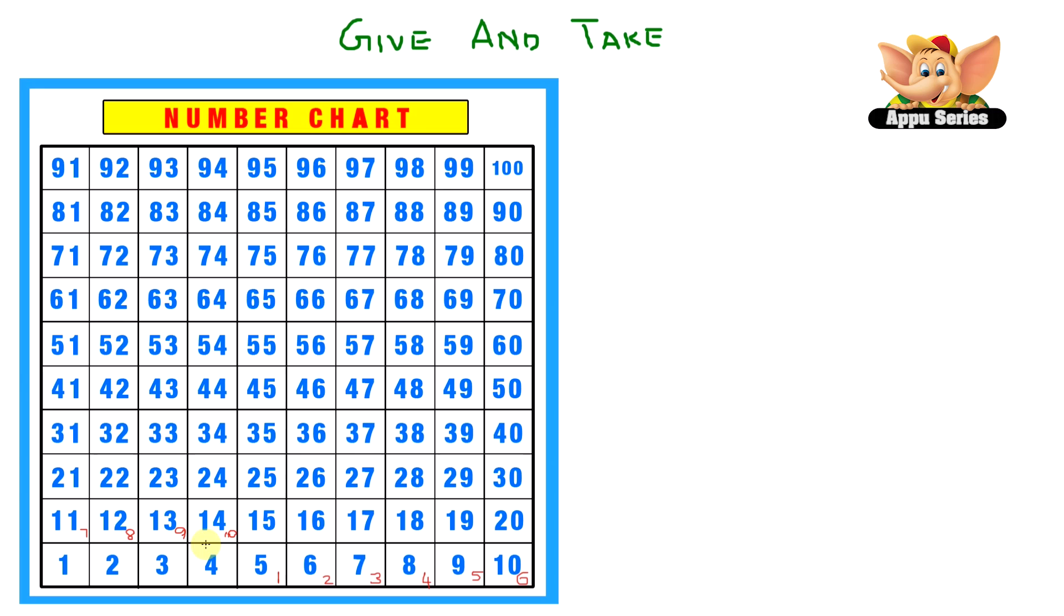Now we moved 10 blocks from 4 to reach 14. But do you think there is a shortcut? Well, if you said yes, you're right. Just jump one row up. This means you have moved 10 blocks. In other words, it's 4 plus 10 equals 14.